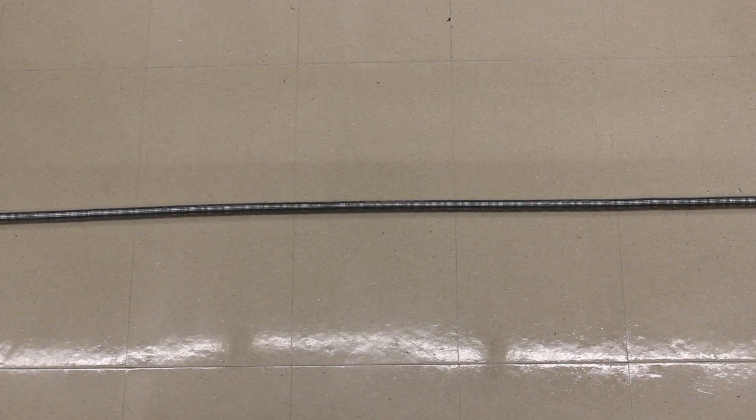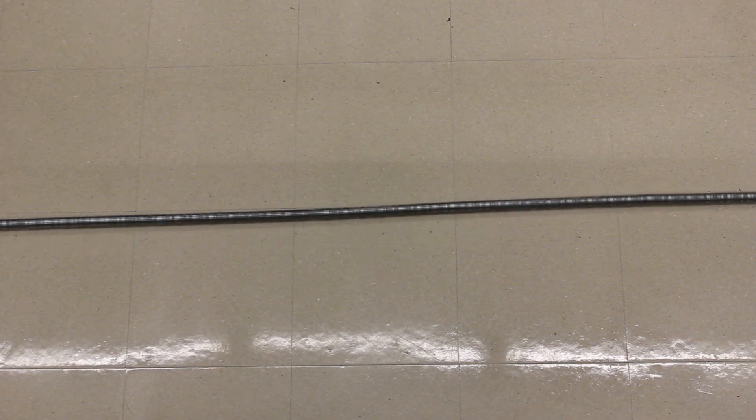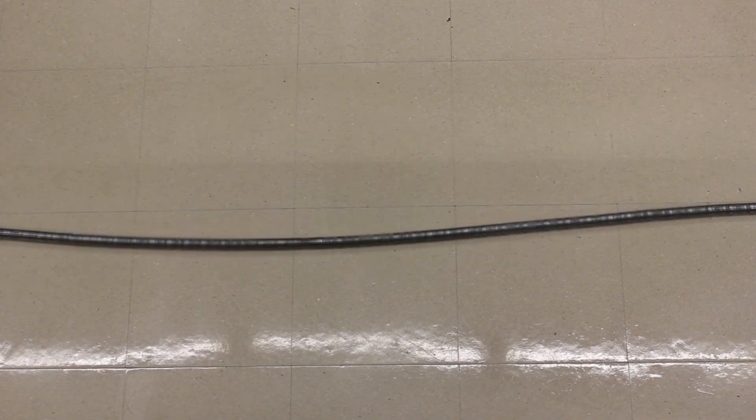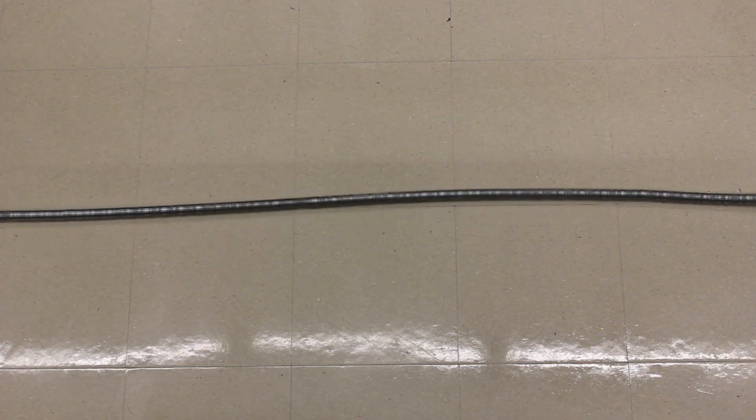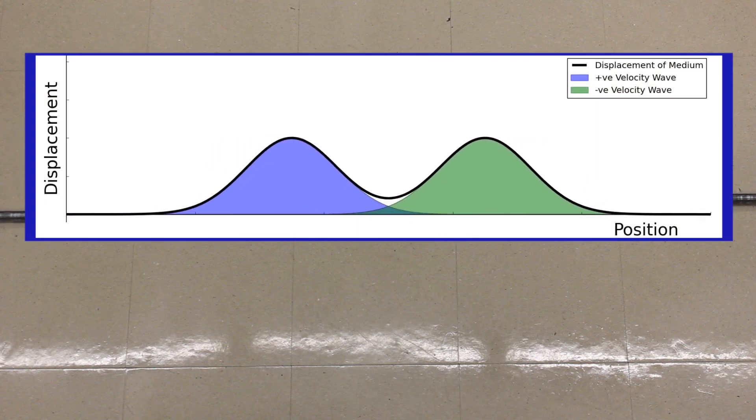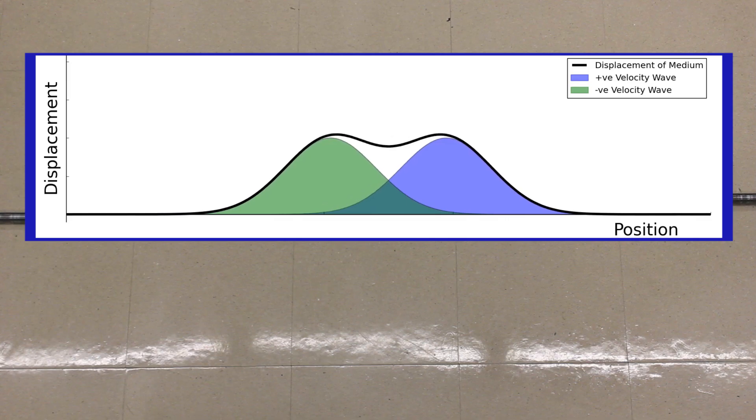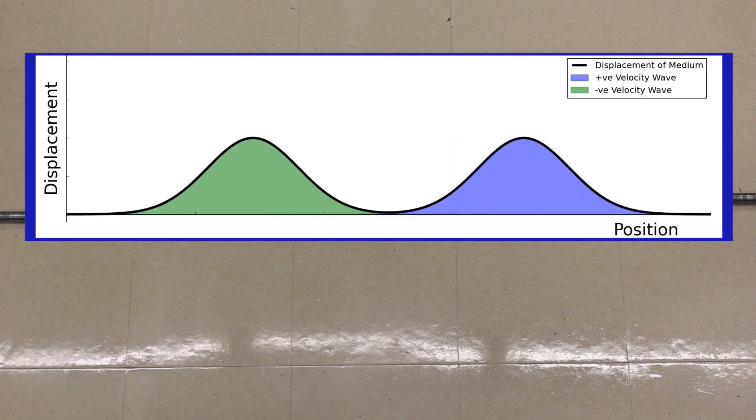So, look closely to see what happens. So, what you should have seen is that when the pulses came together, their amplitudes added and so that right in the center when the pulses met, we had a very large amplitude or twice the amplitude of the individual pulses.